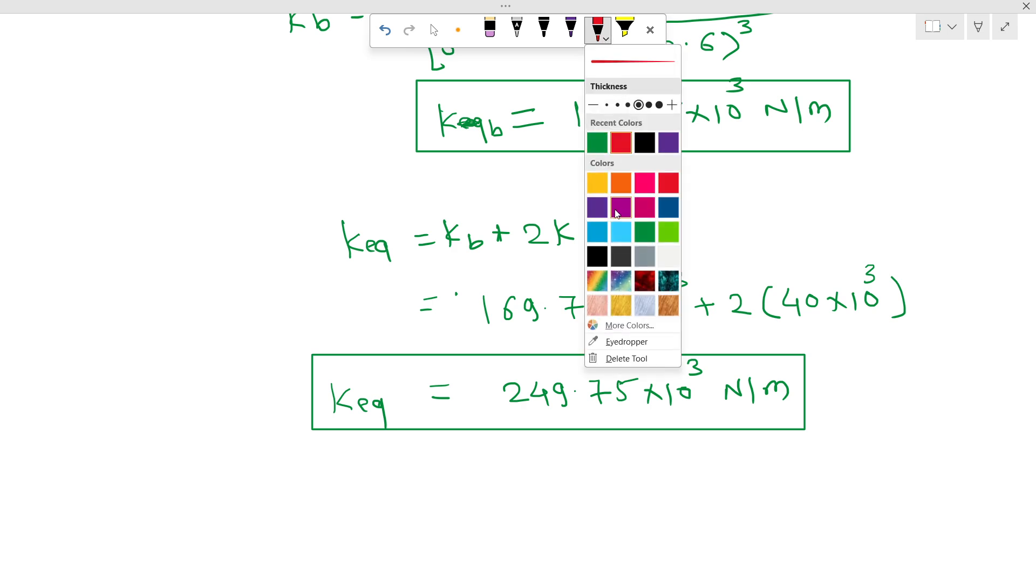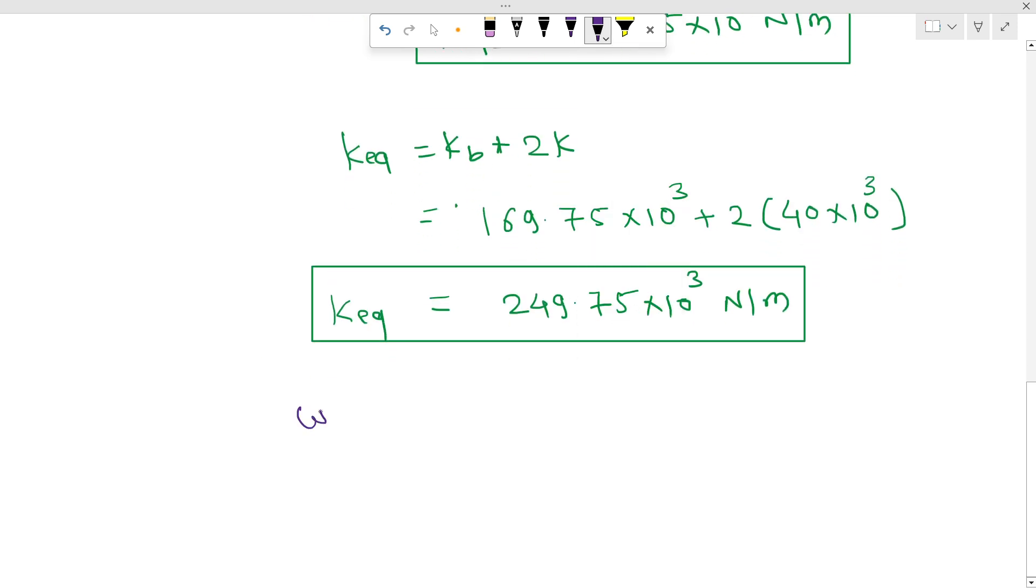Now we can easily find natural frequency omega n. Omega n equals square root of K equivalent divided by m. That equals 249.75 times 10 raised to 3 divided by our mass is given 10 kilo Newton, so 10 times 10 raised to 3 for Newton, and to convert it to kg it will be 9.81.